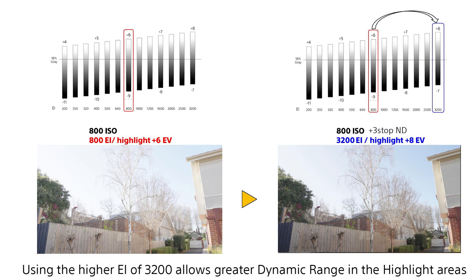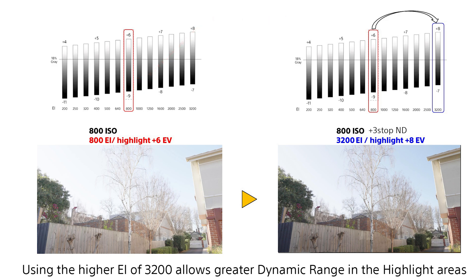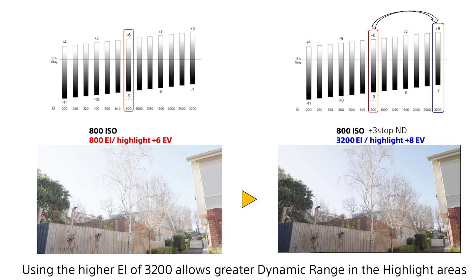Looking at this side-by-side comparison: on the left hand side is our scene shot at 800 ISO and 800 EI. As you can see from the red box around the dynamic range indicator, we are showing six stops of available dynamic range in the highlights and around nine stops in the shadows. But over on the right hand side, by pushing our exposure index up to 3200, we are gaining an extra two stops of highlight dynamic range — going from six stops at 800 EI up to eight stops at 3200 EI.